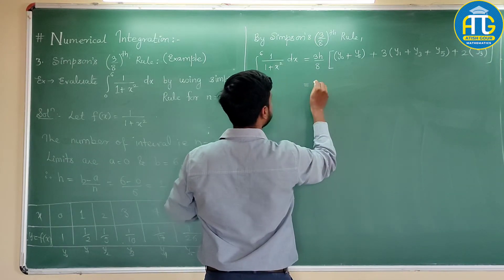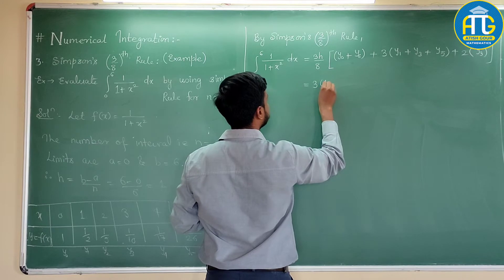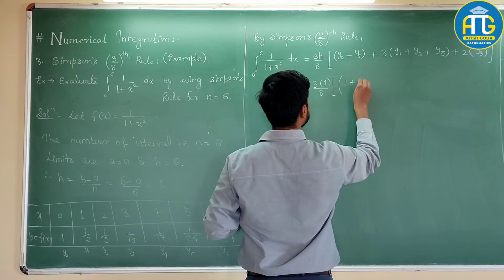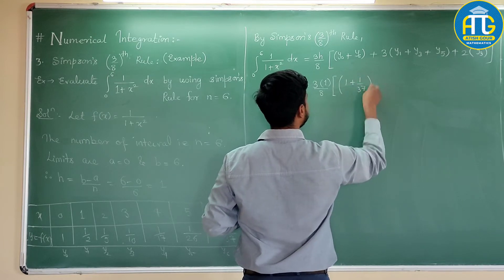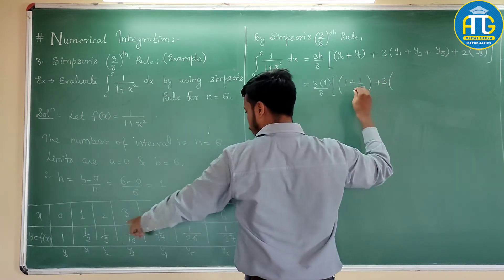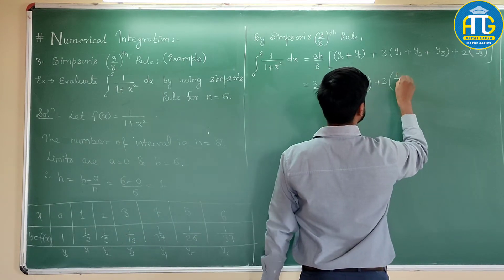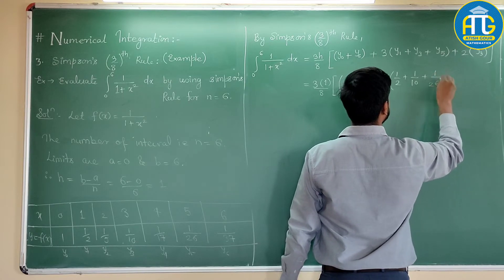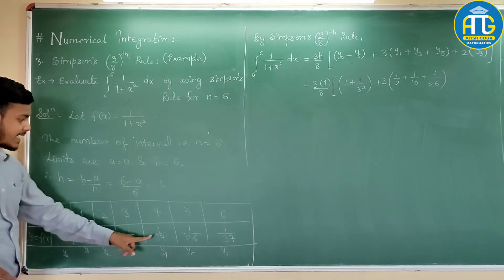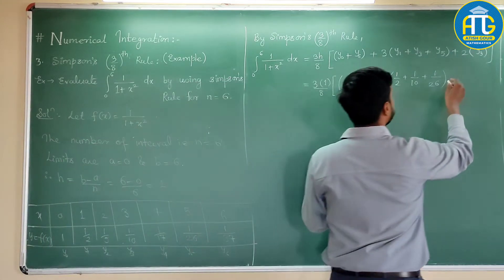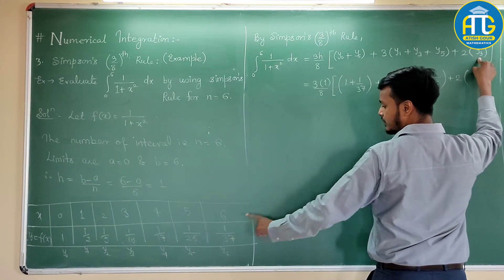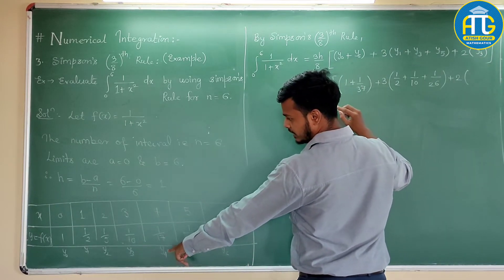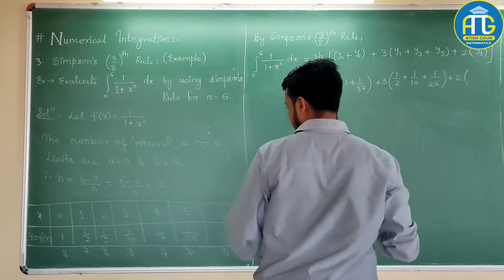Now, substitute all these values. So, this is 3. H is 1 by 8. What is y0? 1 plus y6, 1 by 37. 3 times what is y1? 1 by 2. Y2, 1 by 5. Y4, 1 by 17. And y5, 1 by 26. Plus 2 times what is it? Y3. What is y3? 1 by 10.